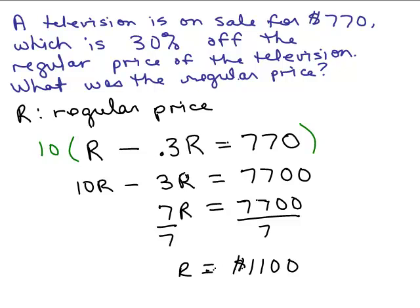Now there's one other way to consider this problem. If it's on sale for 770 and that's 30% off the regular price, then what percent of the regular price are you paying? So you've got 30% off, how much is on? What percent are you still paying? Well, you're still paying 70%. So that's the last way you might consider writing your equation.